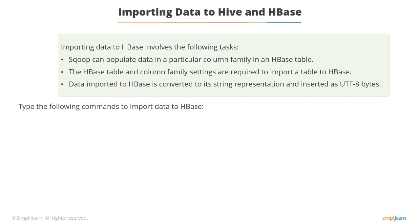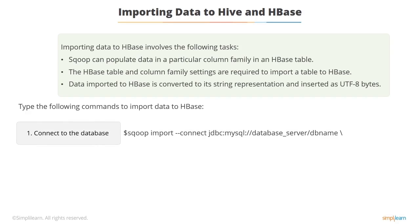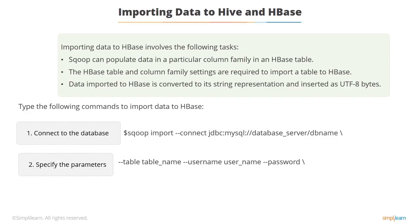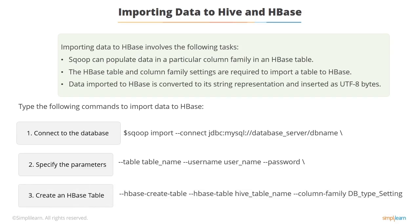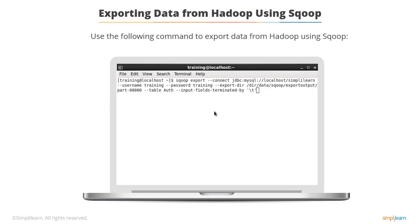Use the commands shown to import data to HBase. Connect to the database using the first command. Specify the parameters such as username, password, and table name using the second command. Create an HBase table with the column family as specified in MySQL using the third command. Now let's discuss the process of exporting data from Hadoop using Sqoop. Use the command shown in the terminal to export data from Hadoop using Sqoop.